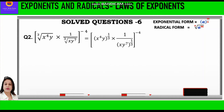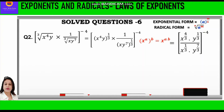Now whenever we have inside and outside two powers, we multiply the powers. In the first bracket we have 4 inside and 1 by 3 outside; similarly in the denominator we have 7 inside and 1 by 3 outside. So we multiply 1 by 3 with each of the variables and write x raised to power 4 by 3, into y raised to power 1 by 3, upon x raised to power 1 by 3, into y raised to power 7 by 3, and the whole raised to power minus 4.